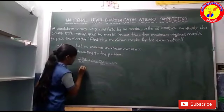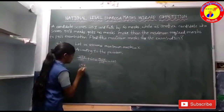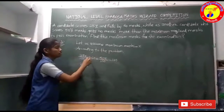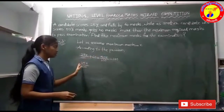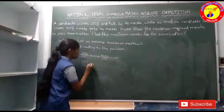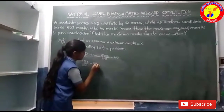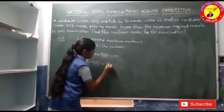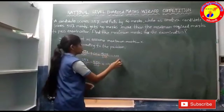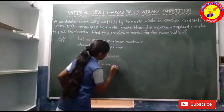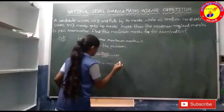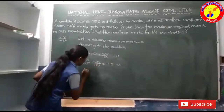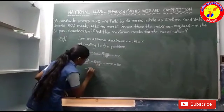So equating both sides: 25X by 100 plus 60 equals 50X by 100 minus 40. When 50X by 100 transposes to the left-hand side, it becomes minus 50X by 100. And minus 60 goes to the left-hand side, becoming minus 60. So 25X minus 50X gives minus 25X by 100, equal to minus 40 minus 60.